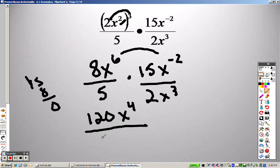5 times 2 is 10, and I have an x to the 3rd. So, basically, I can divide a 10 out of both of those, so I really just have a 12 on top.